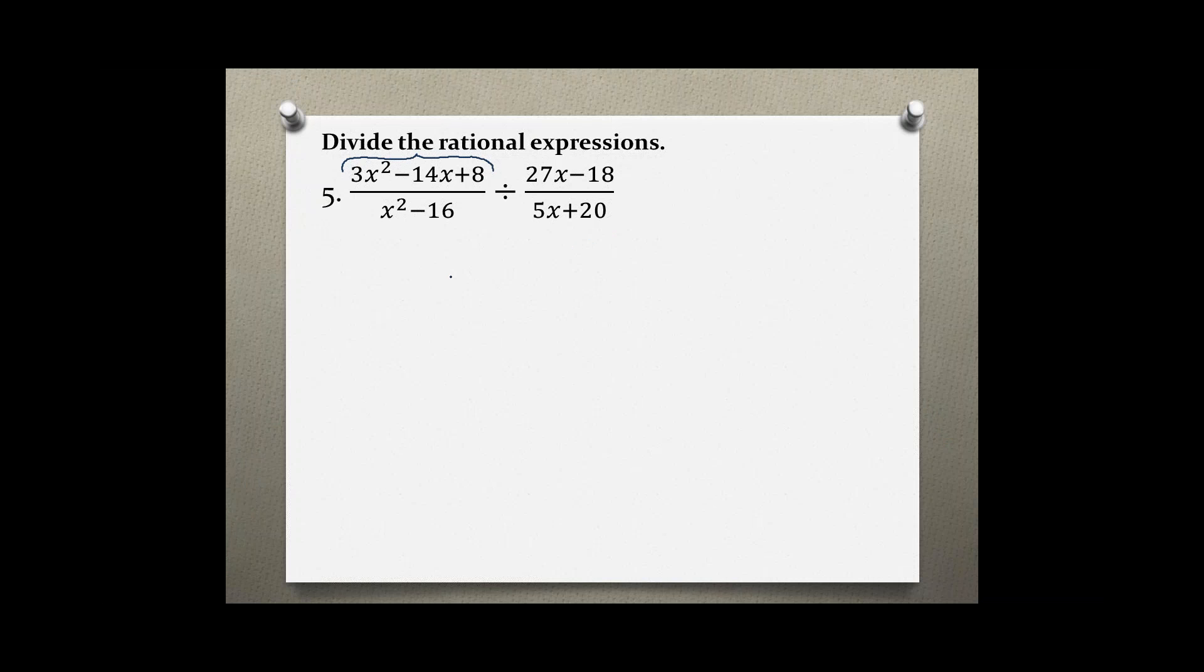I don't see a greatest common factor, so this would be a trinomial with a coefficient larger than one. I'm going to use the method of multiplying the first by itself and the last number also by the first. I'm just going to rewrite my problem now. So 3 times 3 is 9x² minus 14x plus 24.